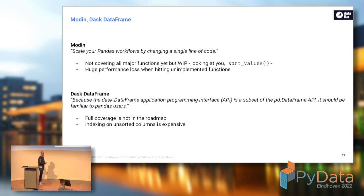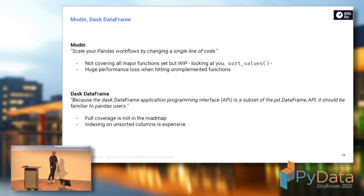What about Modin and Dask DataFrame? For those, it's going to be quite easy because they take the Pandas API either as a subset or try to replicate it. In the case of Modin, their goal is to replicate 100% of the Pandas API — to build an efficient drop-in replacement for Pandas and ensure full compatibility. That's an interesting approach, especially when you want to avoid migrating code to a new framework. However, they're still not there yet — it's quite a lot of work.